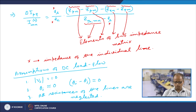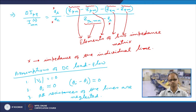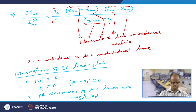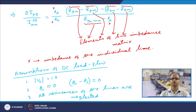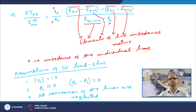Now we apply the assumptions of the DC load flow, which we have already discussed. In the DC load flow, we assume that all bus voltages are equal to 1.0 per unit. All bus voltage angles are approximately equal to zero — not exactly zero, but very close, for example 1 degree, 2 degree, 4 degree, 5 degree, or minus 1, minus 2, minus 5 degrees. So theta_i minus theta_j is also reasonably close to zero. We also neglect all resistances of the lines.